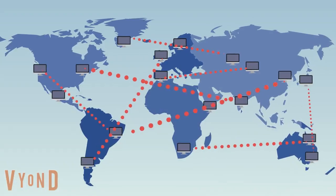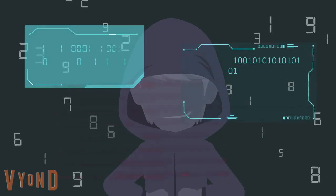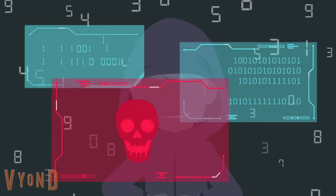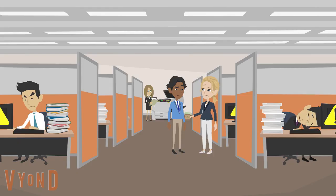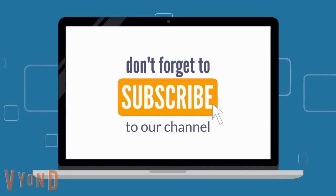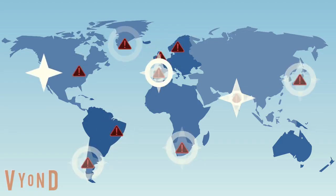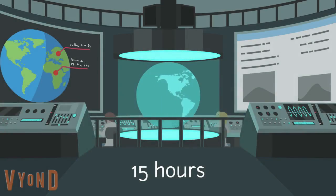The aim of the Morris virus was to measure the size of the internet, but due to a programming error it spread so fast it couldn't be contained, and inadvertently began interfering with the normal operation of computers. The Morris virus infected almost all of the known internet at that time, which comprised around 15,000 computers, and did so within 15 hours.